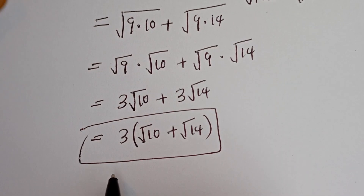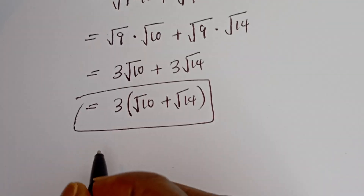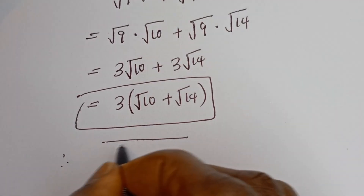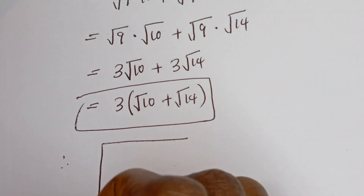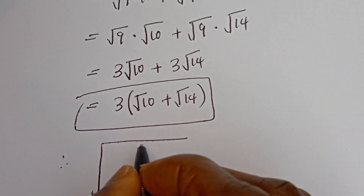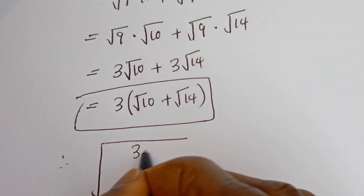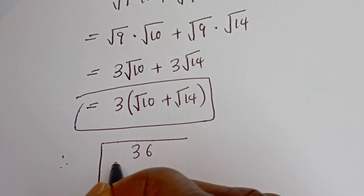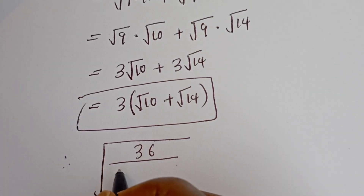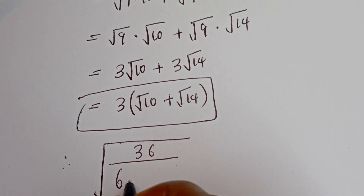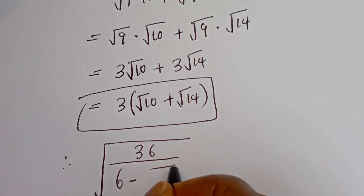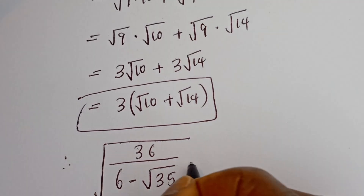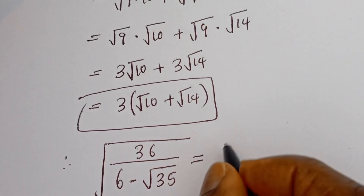Therefore, square root of 36 divided by 6 minus square root of 35 is equal to 3 times the quantity root 10 plus root 14.